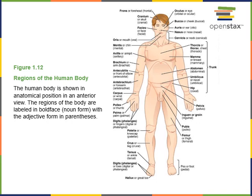Thoracic is the chest — the thoracic cavity contains the heart and lungs. Mammary is the breast region, where the mammary glands are located. Sometimes the literal historical meaning of a word differs from the technical anatomical meaning. Abdominal means belly — the abdominal cavity contains most of the digestive organs like the stomach and intestines. The word abdomen comes from the Latin word 'abdere,' which means to hide, referring to the organs hidden within the abdominal cavity.